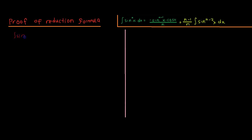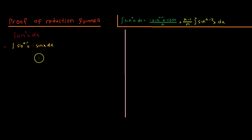To begin, we apply algebra and manipulate the initial expression: the integral of sine of x to the power of n, splitting it into sine of x multiplied by sine of x to the power of n minus 1. This is still sine of x to the power of n, since when we multiply we add the powers, so n minus 1 plus 1 is still n.